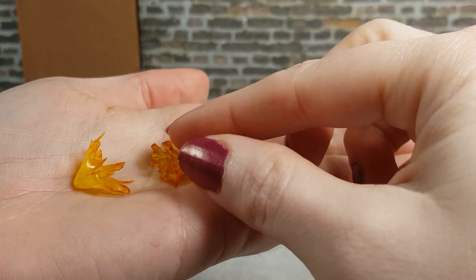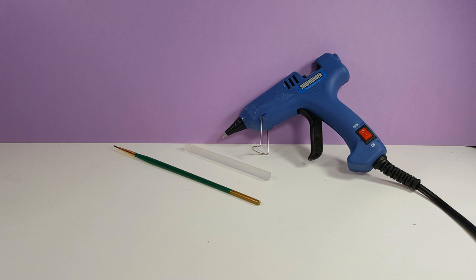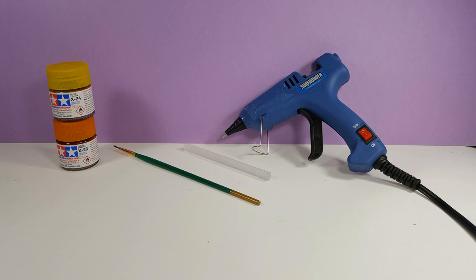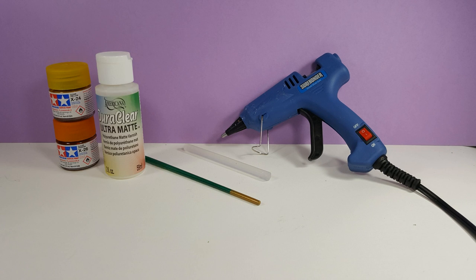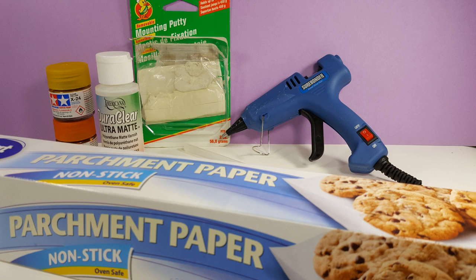The materials I'll be using today are a detail glue gun, glue sticks, paint brushes, clear orange paint, clear yellow paint, matte sealant, poster wall mounting putty, and parchment paper.